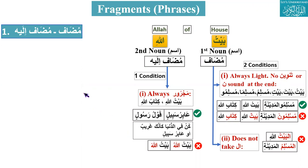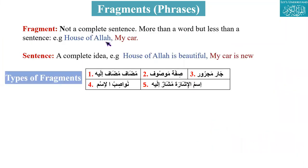We are going to start our first session of this week. As we know, we were on the north part, the most important part of grammar. We started fragments and there are five fragments: Mudaf, Mudaf Ilai, Sifa Masoof, Jar Majroor, and Nawasib ul-Ism, and then Ismul Ishara Mushar Ilai. So we have covered so far Mudaf, Mudaf Ilai, Sifa Masoof. Today we will do the Jar Majroor.